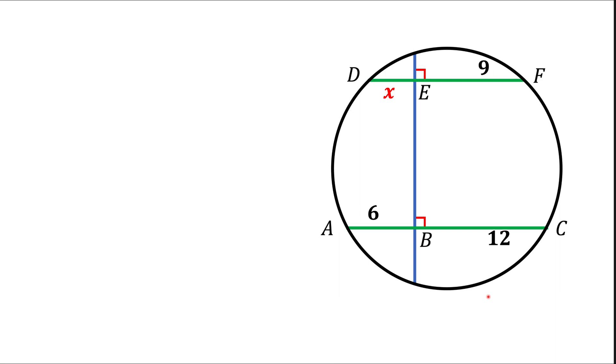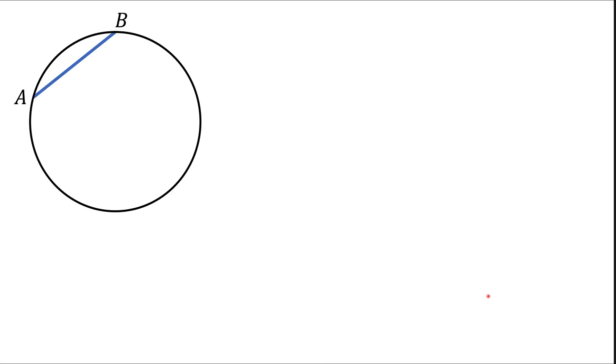In a way that AB is 6, BC is 12, EF is 9, and we're asked to find DE which is X. To solve this problem we're going to use a fact about chords and center of a circle.